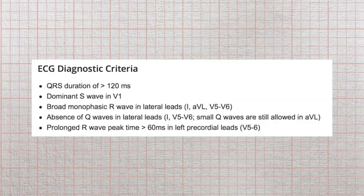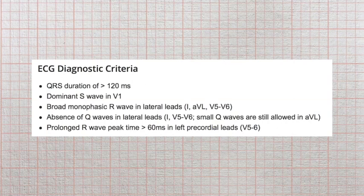To diagnose a left bundle branch block on an ECG, there are a few rules. The QRS duration needs to be greater than 120 milliseconds — or greater than three little boxes wide. You should have a dominant S wave in lead V1, a broad monophasic R wave in the lateral leads 1, AVL, V5, and V6, and absence of Q waves in the lateral leads 1, V5, V6 — though small Q waves are still allowed in AVL. You should also have a prolonged R wave peak time of greater than 60 milliseconds in the left precordial leads V5 and V6.